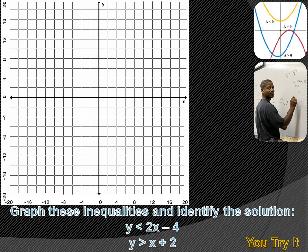We're going to have to graph these two inequalities to find out where the solution set is — what are the values of x and y that satisfy both of these inequalities at the same time? Let's graph y is less than 2x minus 4 first. We'll graph the boundary line: y equals 2x minus 4. Our y-intercept is minus 4, our slope is positive 2, so that boundary line is going to look just like that.